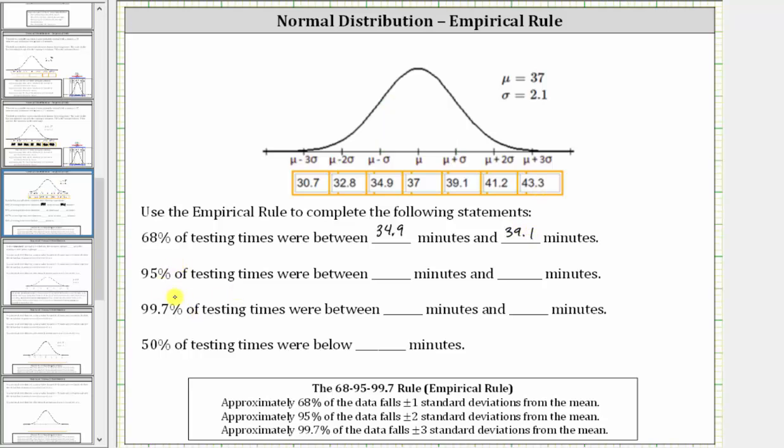Next, 95% of the testing times were between what times? Approximately 95% of the data falls plus or minus two standard deviations from the mean, which for our data is from 32.8 to 41.2 minutes.